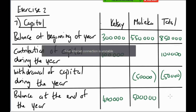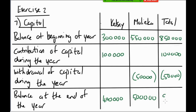Total contributions were 100,000 and total withdrawals were 50,000. Checking across: 850,000 + 100,000 = 950,000; minus 50,000 = 900,000. Checking down also gives 900,000 - the figures agree. For this lesson we focused on capital accounts, and in the next lesson on partnerships we will look at the current accounts. Thank you for listening.